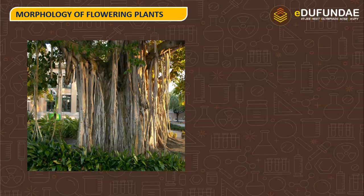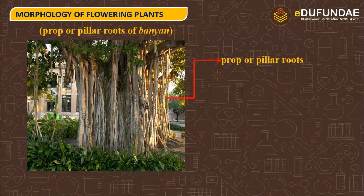This is the picture of the banyan tree. The prop roots and pillar roots are the hanging structures, hanging vertically downward, and they provide support to the tree.